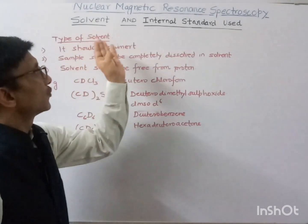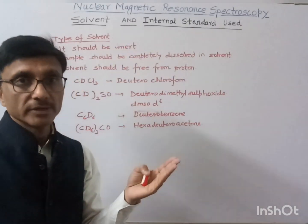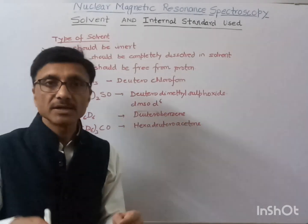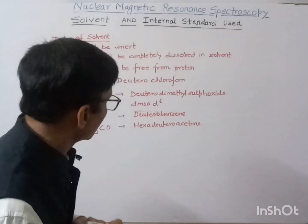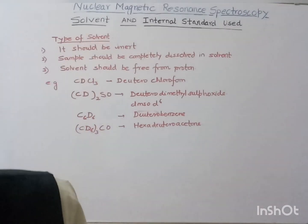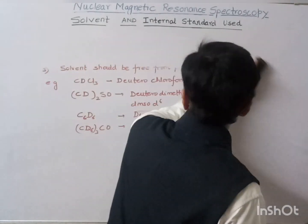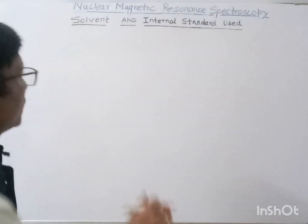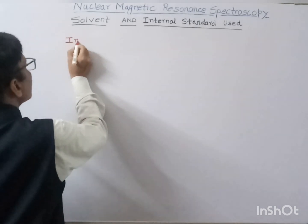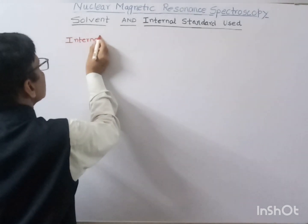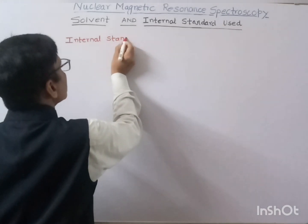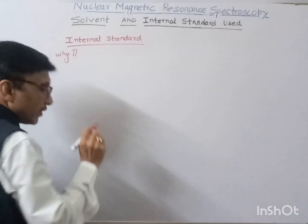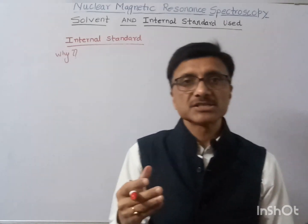Now, to record the NMR spectra of any sample, a drop of internal standard is also added to it. First, the sample is dissolved in the solvent, and then a drop of internal standard is added. The main internal standard used is called tetramethylsilane.